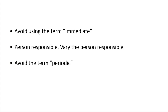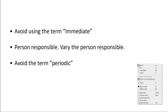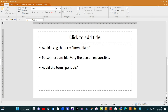I'll explain that in a second. When you're allocating a control measure to a person within the organization for them to sign off and to ensure that the control measure is implemented, make sure it's not the same person. Try and vary the person. And avoid using the term 'periodic.' So let me just very quickly show you.